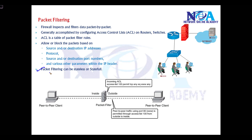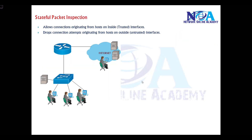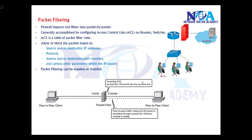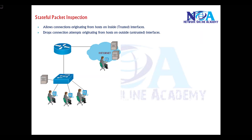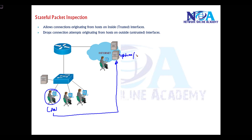Packet filtering can be either stateless or stateful. Stateful packet inspection allows connections originating from inside interfaces and drops connections from the outside. For example, users on the LAN should be able to initiate traffic to internet servers like Yahoo or Google, and return traffic from those servers should also be allowed back in.